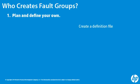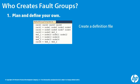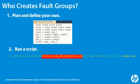First, you describe your cluster's Fault Groups in a definition file. Then pass the definition file to the Fault Group Generator script and save the script's output to a SQL file that you pass to the database. This SQL file contains the SQL statements needed to create Fault Groups for your cluster. All you need to do is run the output script.